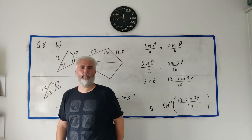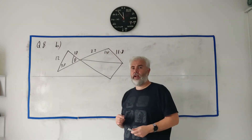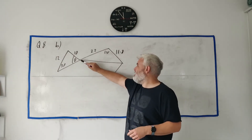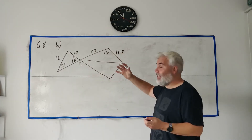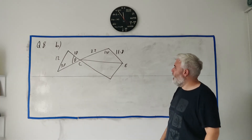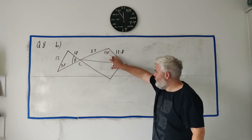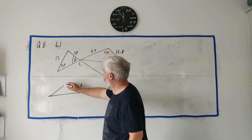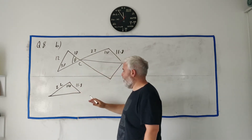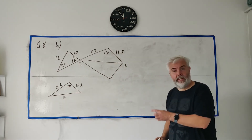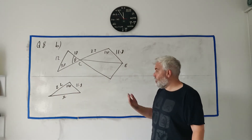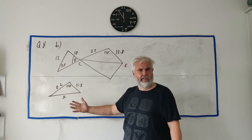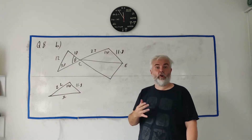In part B2 they ask us for the length CE. Drawing a simpler triangle, we have a length of 11.8, a length of 22, and an angle of 110 degrees, with the unknown length as X. It's not a right angle triangle, and the sine rule won't work here because we don't have another angle with a length across from it. They've already told us to use the cosine rule.